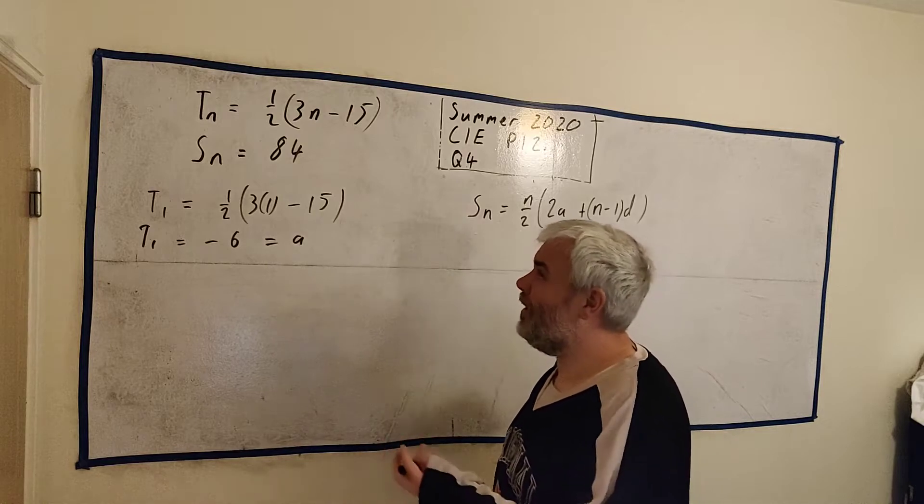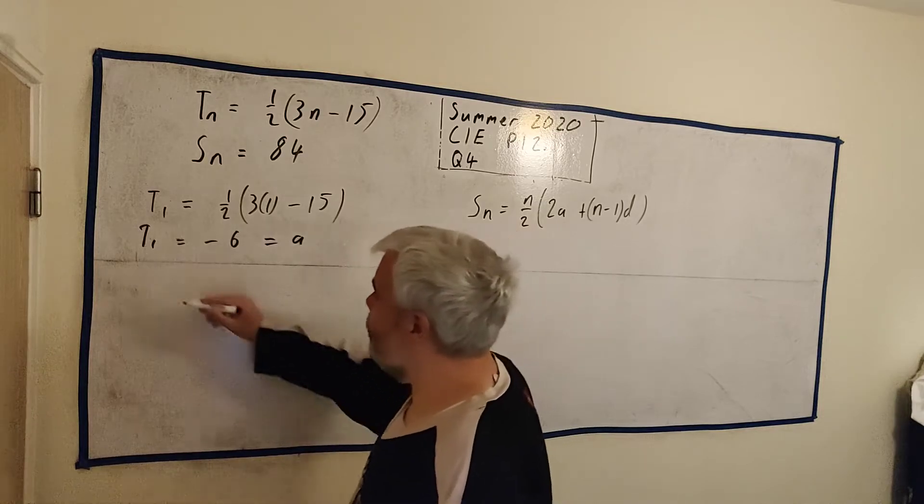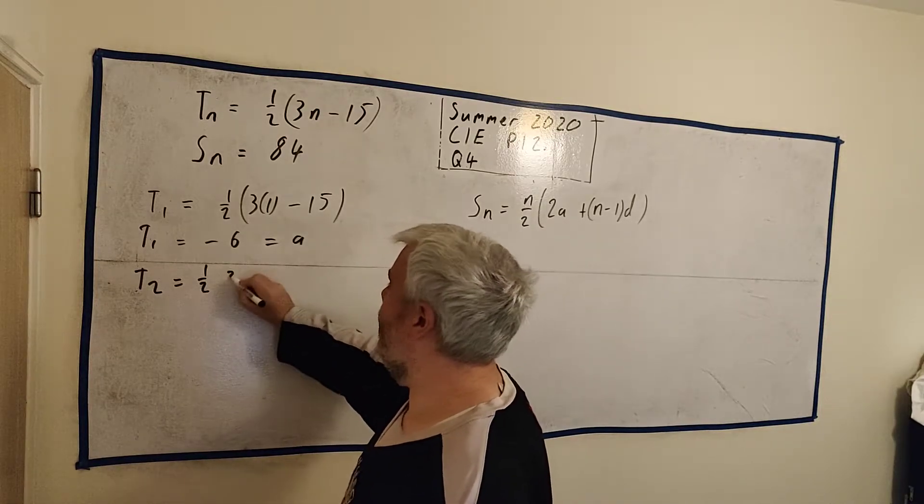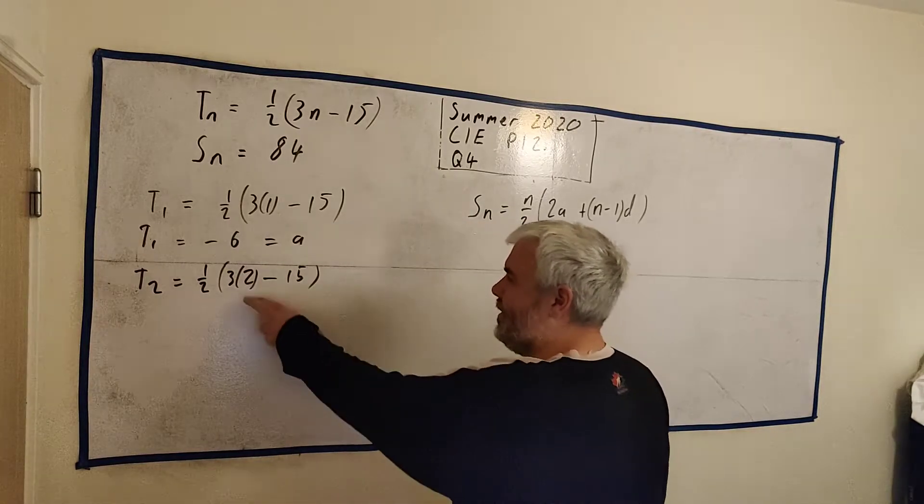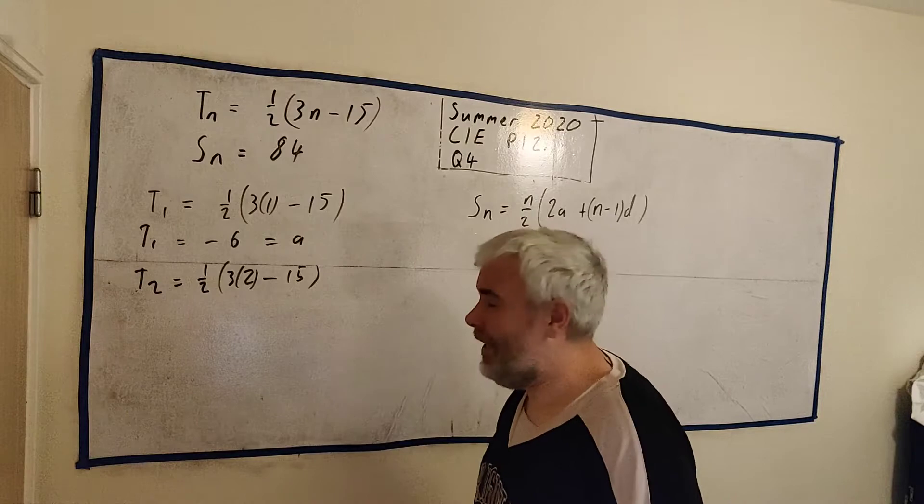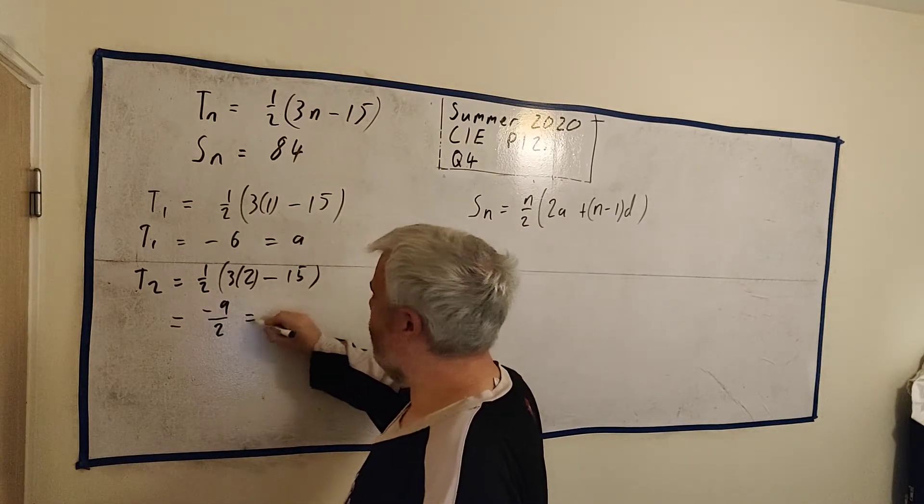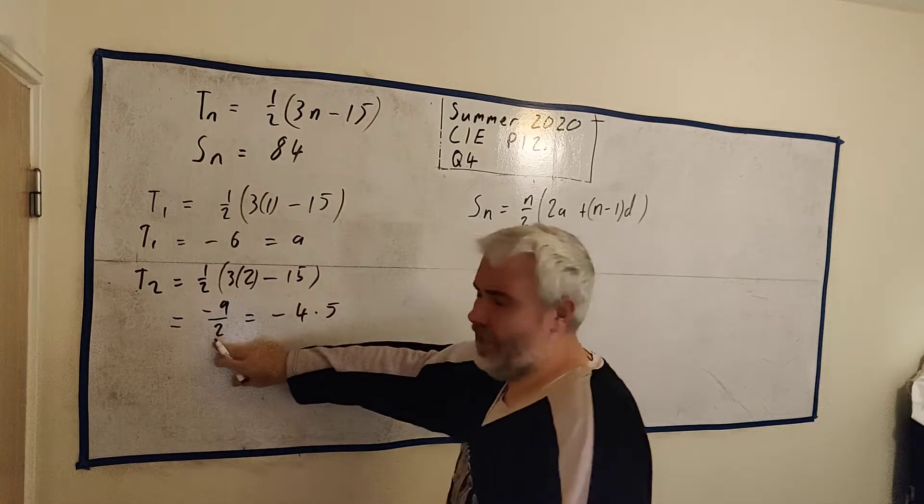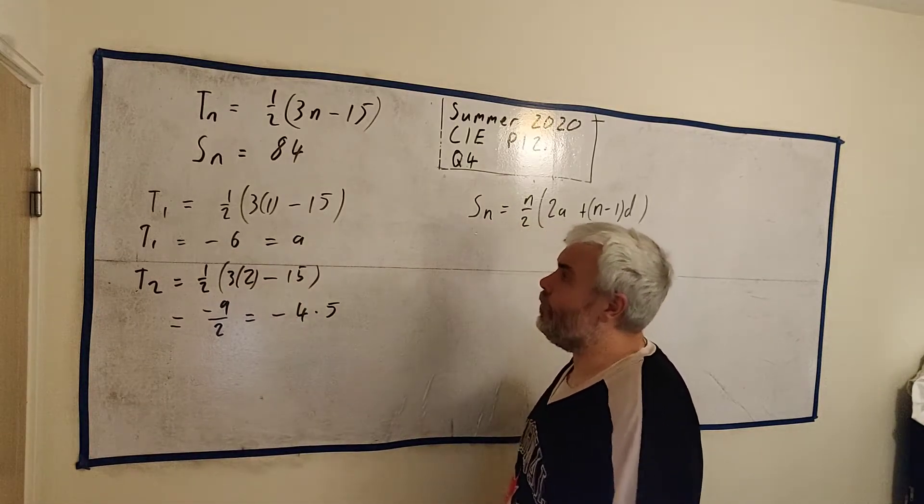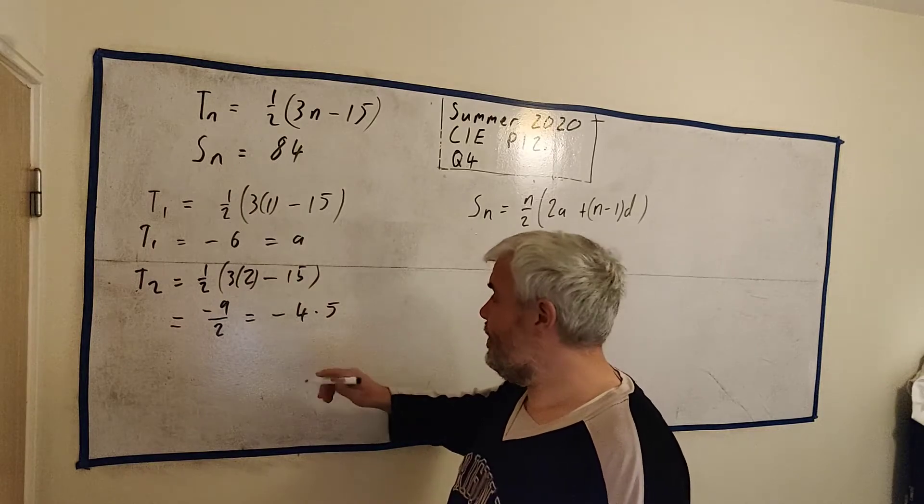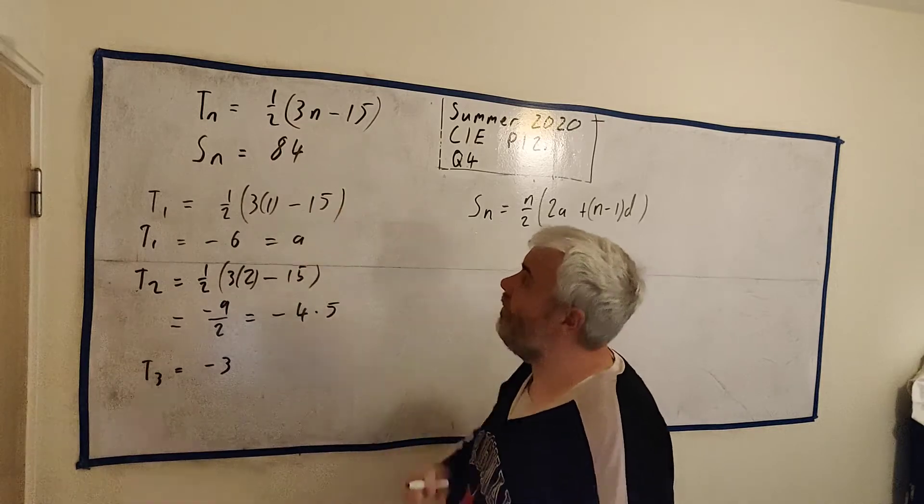We can find out T2 and that way we'll know what D is. So T2 is equal to a half times 3 times 2 minus 15. And so that's 6 minus 15 is minus 9. So that's equal to minus 9 over 2, that's equal to minus 4.5. Or you can leave it like this if you'd rather. So if we start minus 6, then minus 4 and a half. You can put in T3, but I can already see that T3 will equal minus 3.